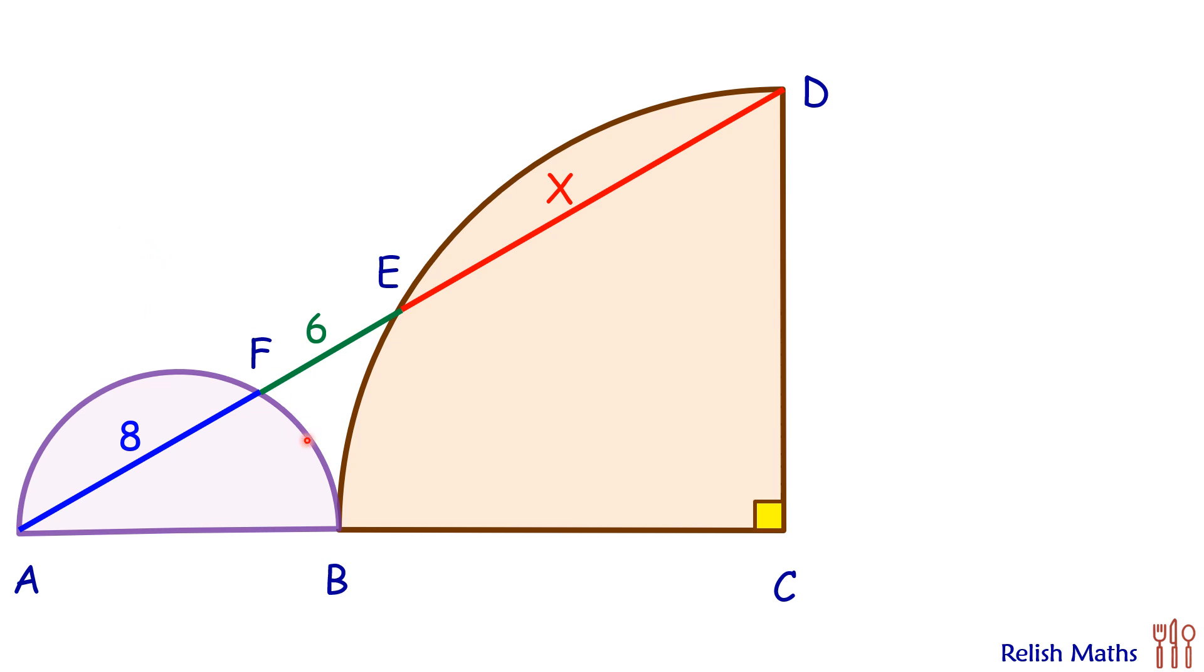For our solution, let's do a small construction and join BF. We know the diameter always subtends an angle of 90 degrees, thus angle F is 90. Let's join BE. I am interested in finding this angle.